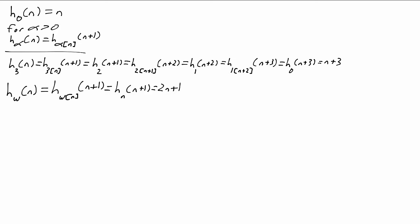So these early functions aren't so impressive, but as the ordinal alpha gets bigger, they start increasing much more rapidly. h_{omega plus omega} of n is h_{omega plus n} of n plus 1, which is 4n times 3. And in general, h_{omega times k} of n is going to be about 2 to the k times n.